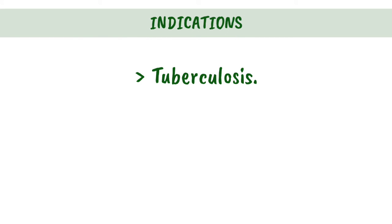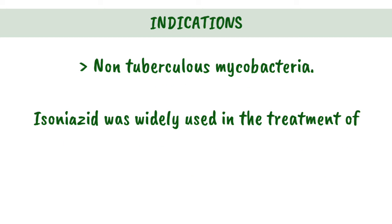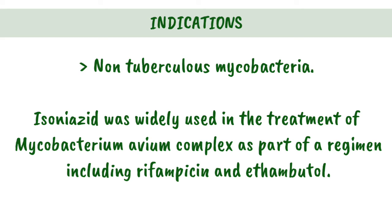Indications: Tuberculosis — isoniazid is often used to treat latent and active tuberculosis infections. Non-tuberculous mycobacteria — isoniazid was widely used in the treatment of Mycobacterium avium complex as part of a regimen including rifampicin and ethambutol.